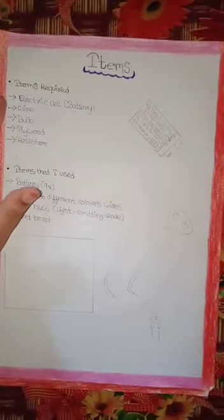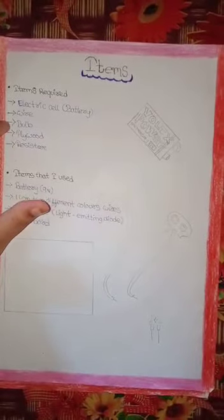For this experiment, items required are: electric cell, wire, bulb, plywood, and a resistor.